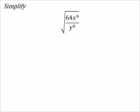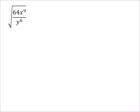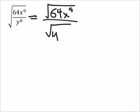So here's what this means. Let's go ahead and move this over. Based on this rule, I can take the square root of 64x to the power of 9 and divide it by the square root of y to the power of 6.